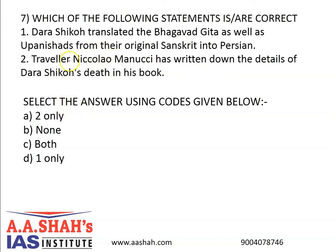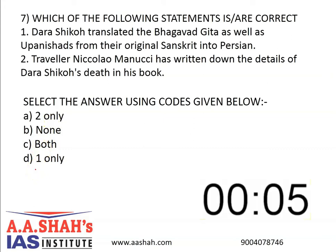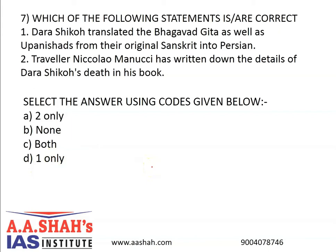Q7. Which of the following statements is or are correct? 1: Dara Shikho translated the Bhagavad Gita as well as Upanishads from their original Sanskrit into Persian. 2: Traveller Nikalao Manoushi has written down the details of Dara Shikho's death in his book. Select the correct answer: A: 2 only. B: None. C: Both. D: 1 only. The correct answer is C: Both. The Ministry of Culture recently set up a seven-member panel of the Archaeological Survey of India to locate the grave of Mughal prince Dara Shikho, believed to be buried somewhere in the Humayun's tomb complex in Delhi.